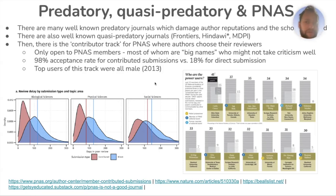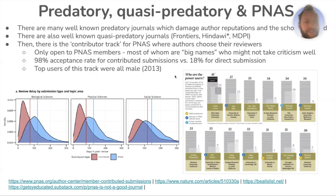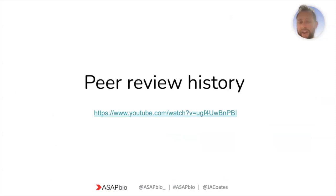Journals themselves are actually damaging peer review with these kinds of practices. There was also a very recent Nature paper where the data was not made available to peer reviewers, and Nature was happy for that to happen — which is not right. But let's talk about the history of peer review, because I said at the start we haven't actually been doing it for very long.